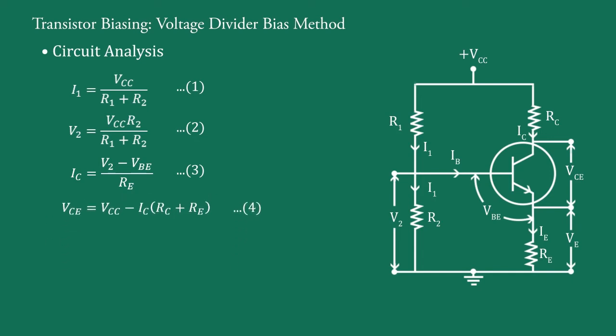Now, make IC subject of the formula. Therefore, we have IC equal to VCC minus VCE upon RC plus RE, say equation 5.